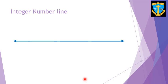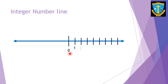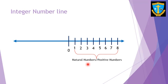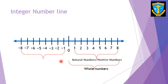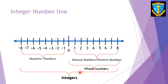Let's look at the integer number line. The line extends on both sides. We place zero in the middle, then put positive numbers on the right-hand side — these are natural numbers. Zero together with the natural numbers gives us whole numbers. On the other side of zero, removing one gives negative one, then negative two and so on — these are called negative numbers. The negative numbers along with whole numbers and zero give us the full collection of integers.